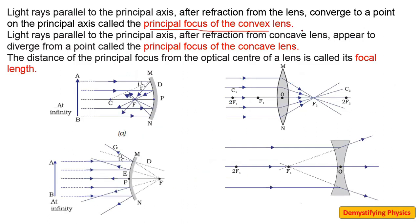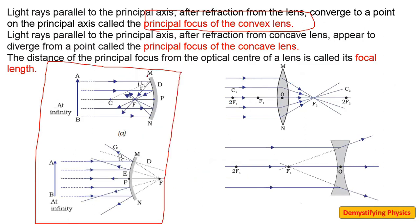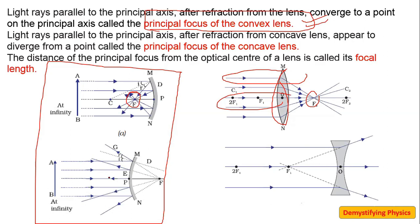Next is the principal focus of a convex lens. For reference, recall the principal focus of mirrors — for a concave mirror, rays parallel to the principal axis converge at a point called the principal focus. Similarly, for a convex lens, rays parallel to the principal axis, after refraction, converge at a point called the principal focus of the convex lens. The rays are actually meeting at the focus, so it is a real focus. For a convex mirror, parallel rays diverge and appear to come from a point — that is the virtual focus.